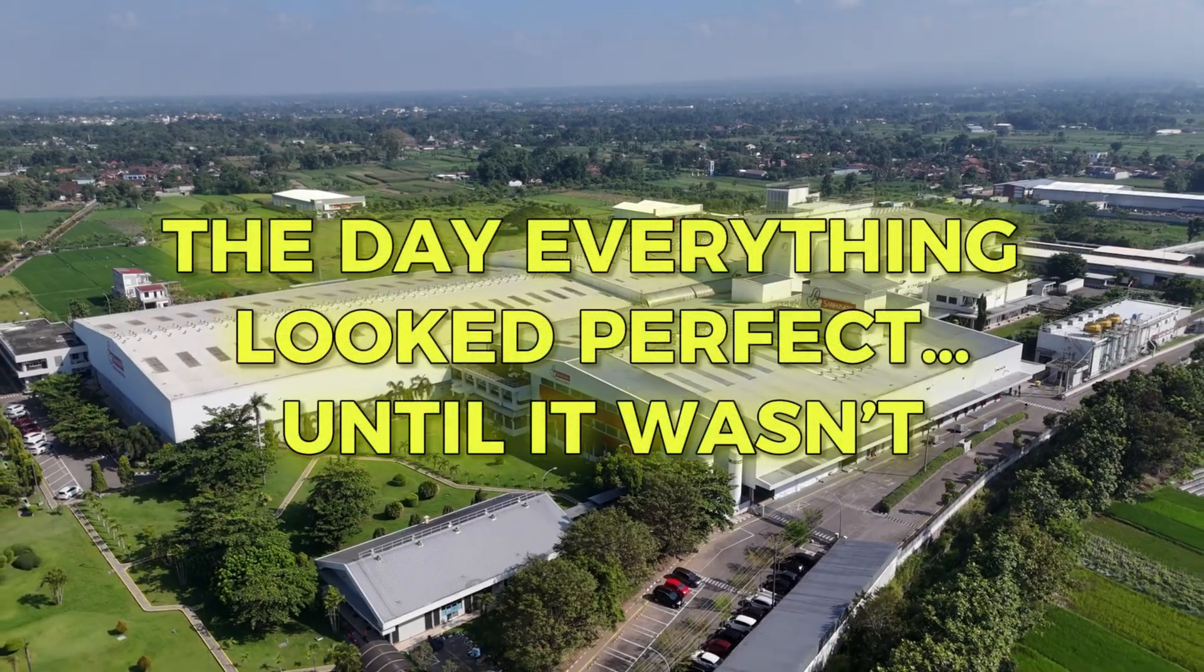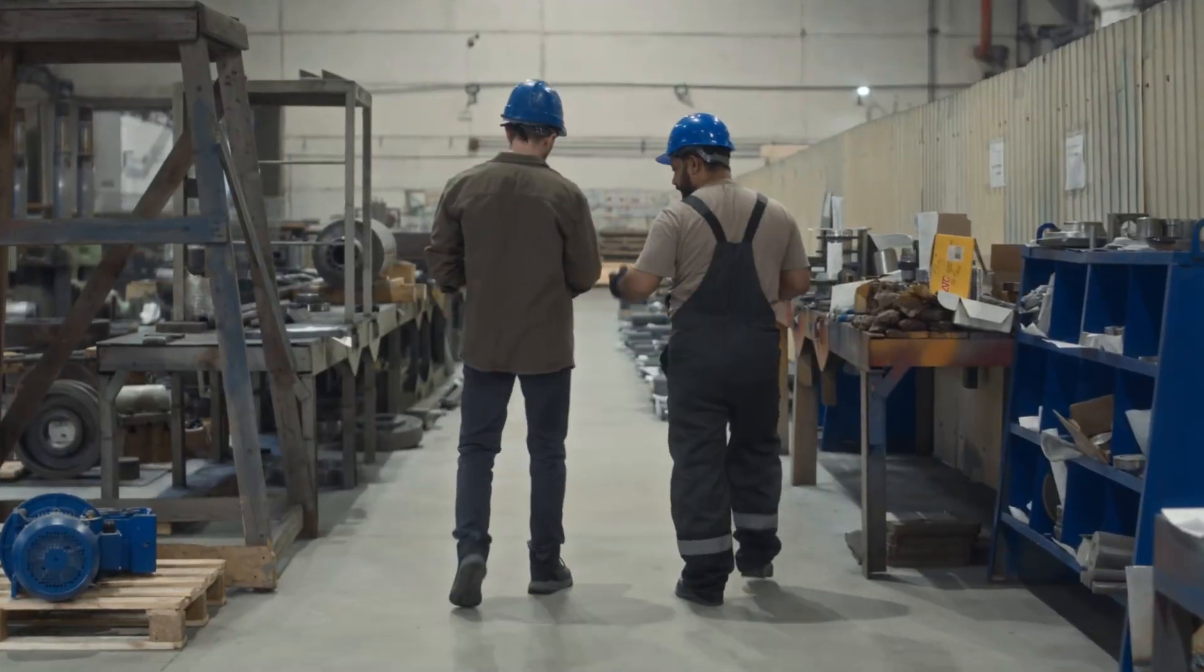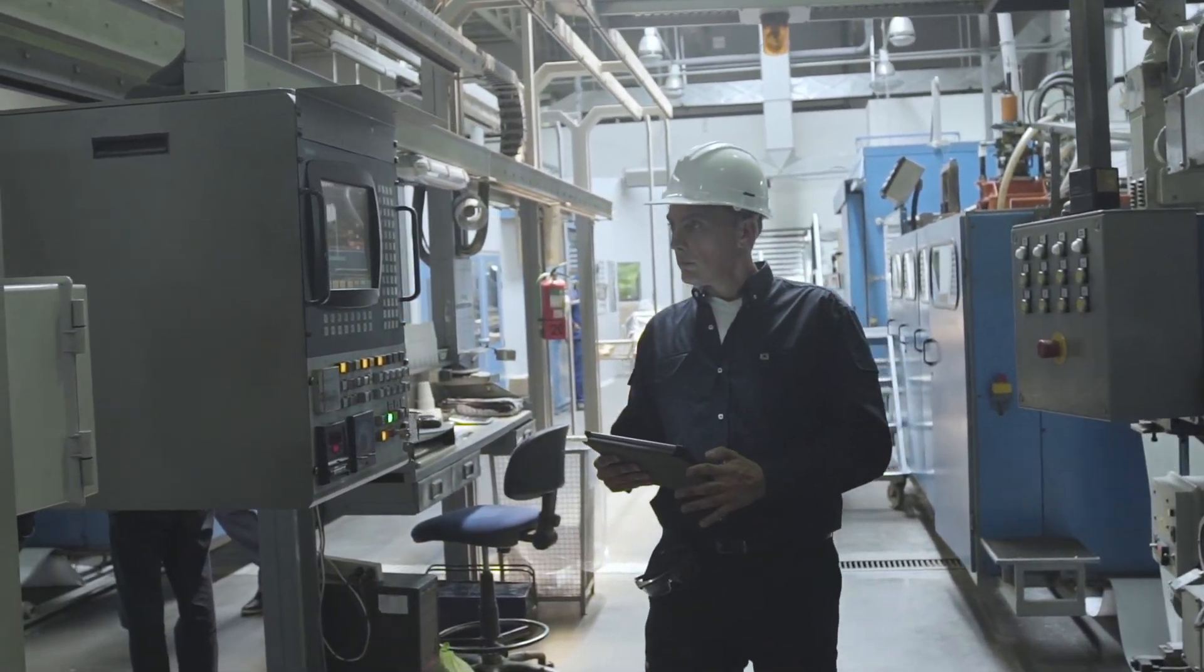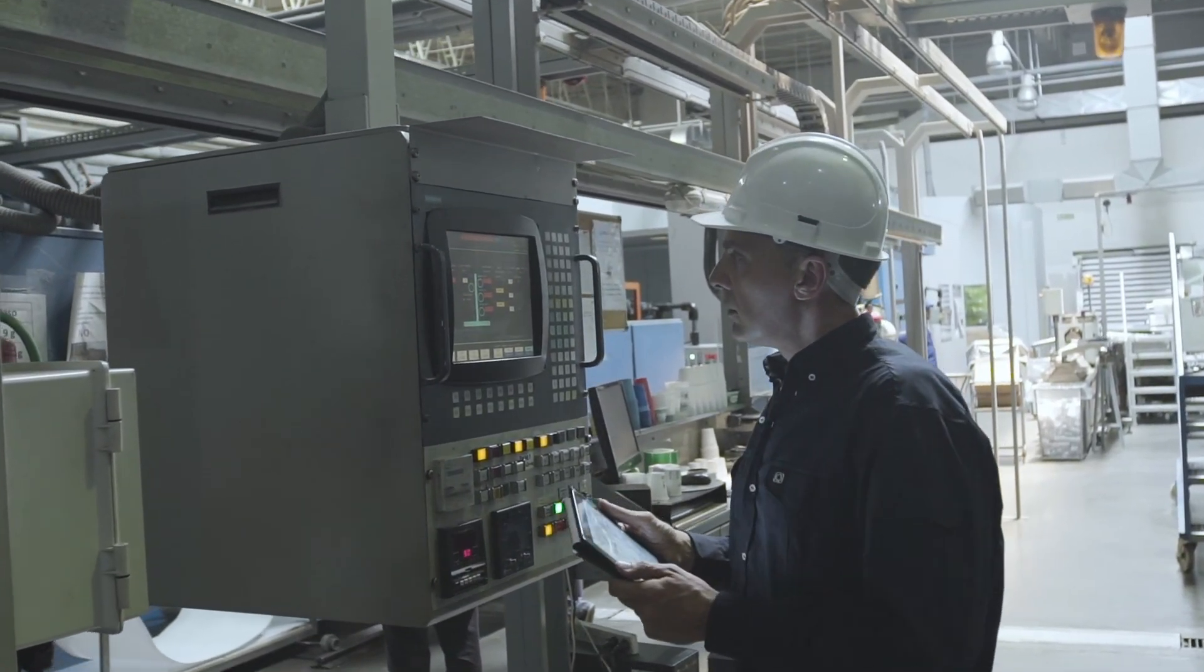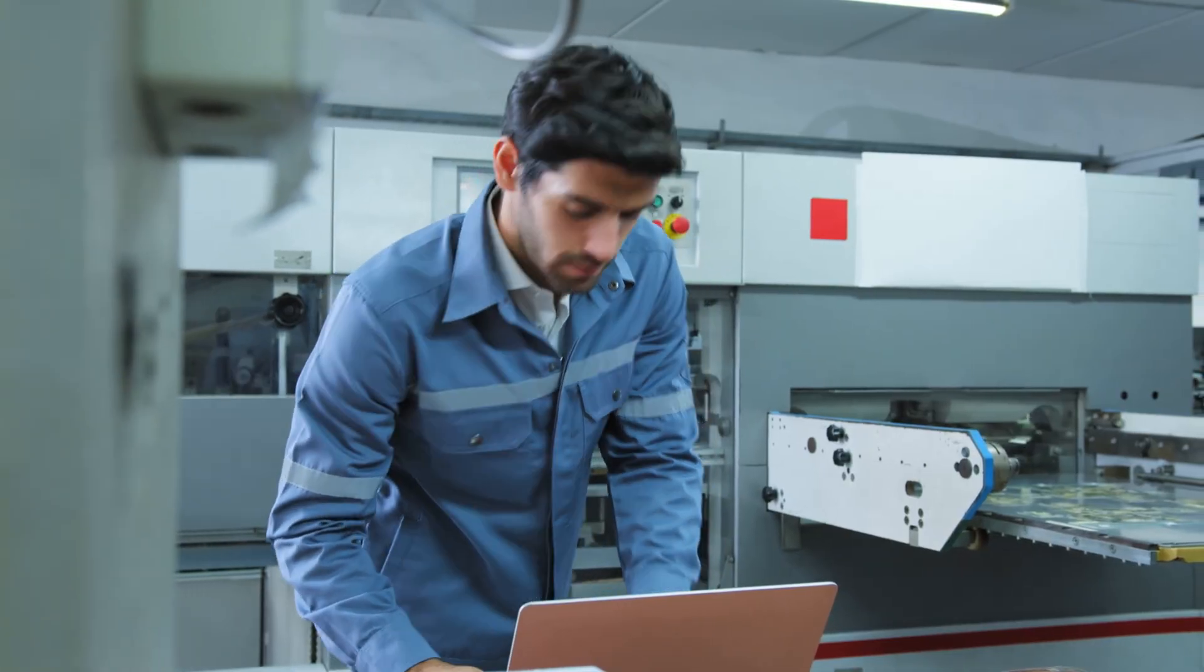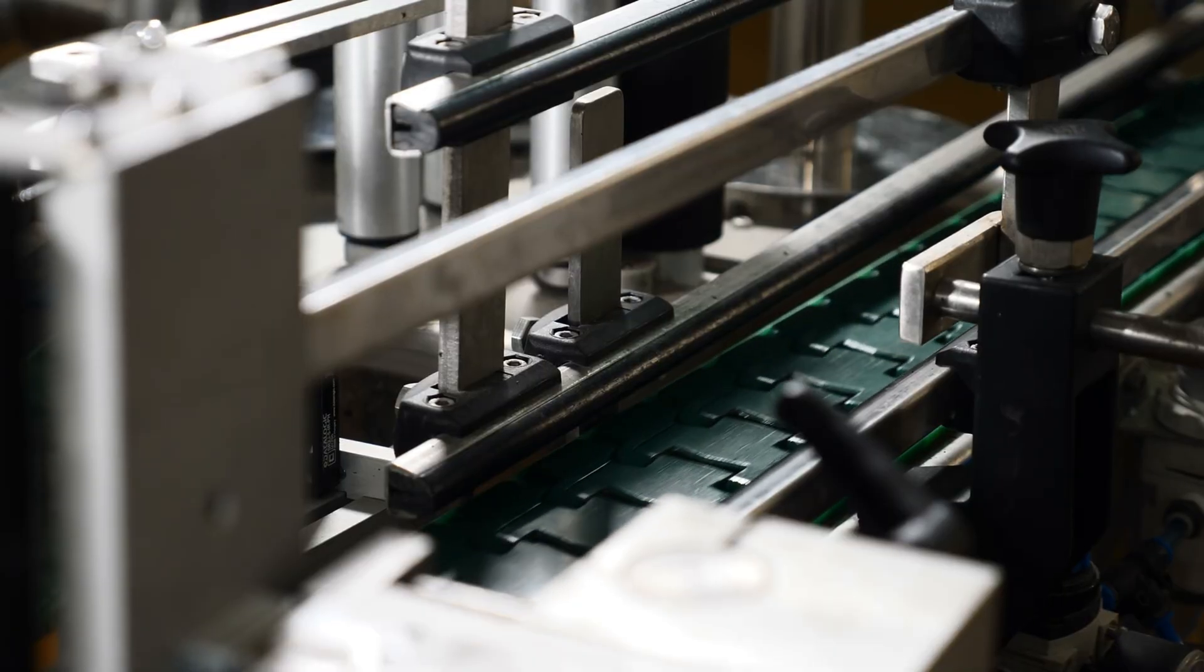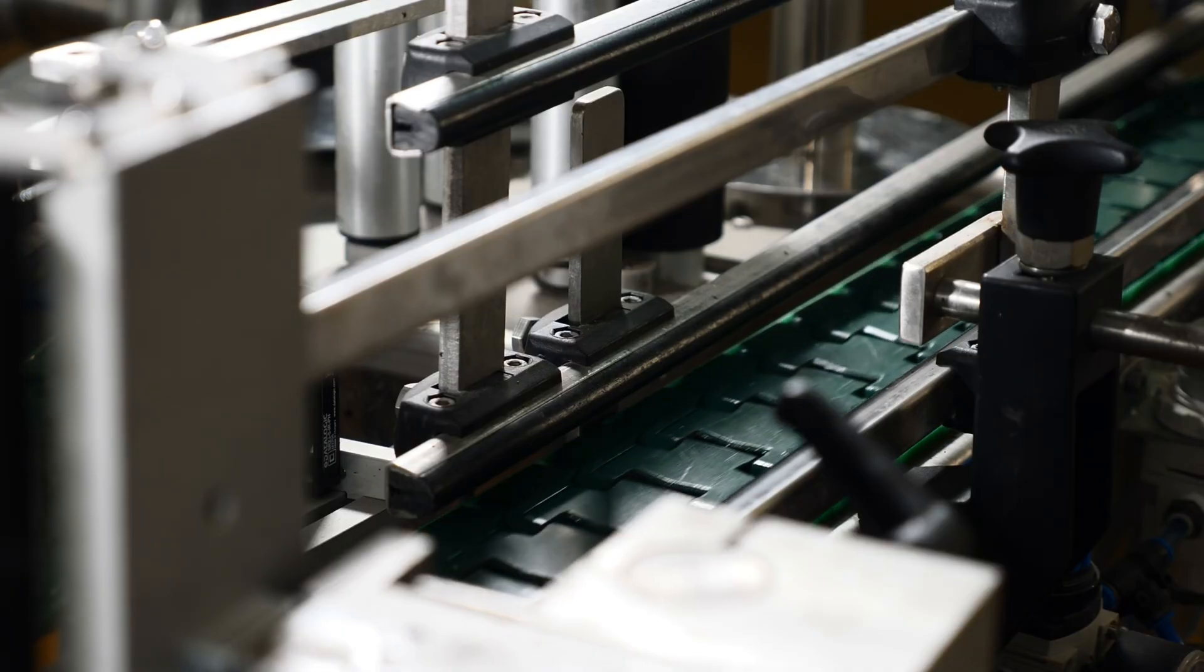The day everything looked perfect, until it wasn't. The shift started normally. Operators walked the floor, machines hummed at synchronized rhythms, and screens glowed green across the control room. The output numbers were better than ever. It was one of those rare days where everything seemed too smooth, too stable, almost suspiciously perfect. But in high-speed manufacturing, perfection is often the calm before the storm.